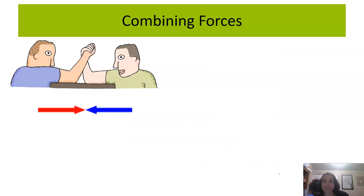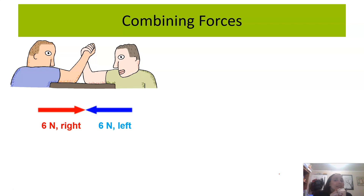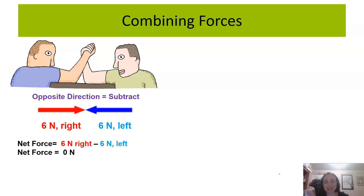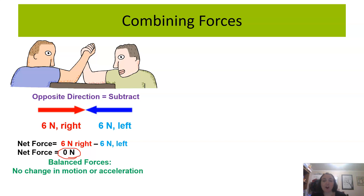Another arm wrestling example. One player is pushing 6 newtons to the right and the other is pushing 6 newtons to the left — opposite directions, so we subtract. 6 newtons minus 6 newtons is a net force of 0 newtons. A net force of 0 means they are balanced, and there is no change in motion or acceleration.